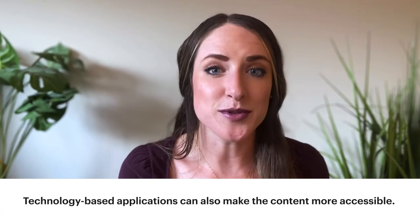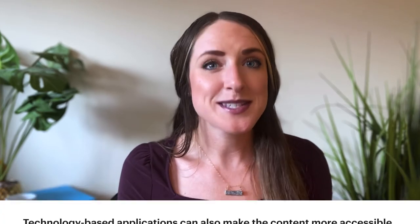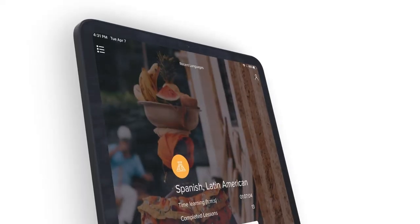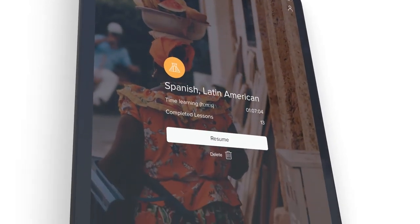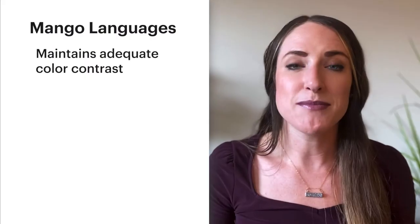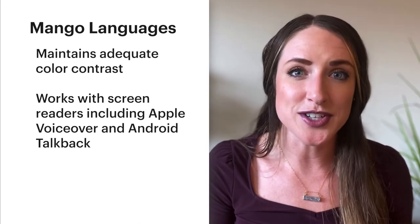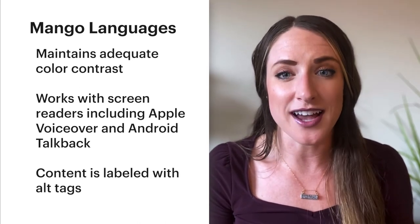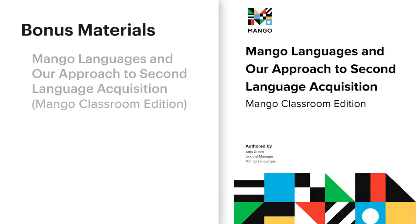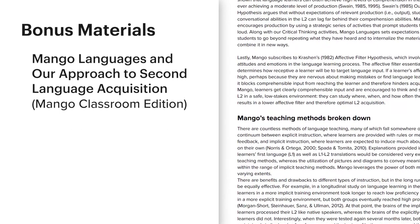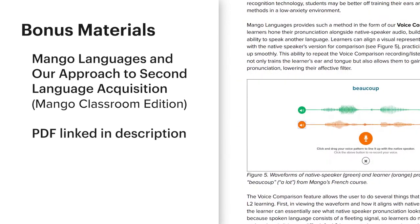Using technology-based applications of the learning material can make content more accessible to learners of diverse needs. If your students don't already use the Mango Languages app, encourage them to use it as a supplement to the class. The Mango Languages app is ADA compliant, which means it maintains adequate color contrast, works with screen readers like Apple VoiceOver and Android TalkBack, and makes use of alt tags. To learn more, check out the white paper linked in the description — it outlines how the app's unique features offer an innovative entry point for learners of diverse needs.